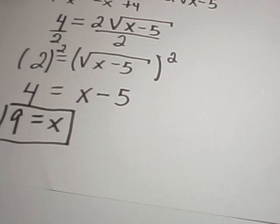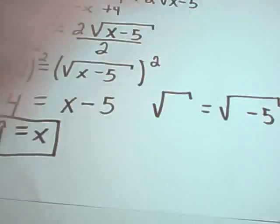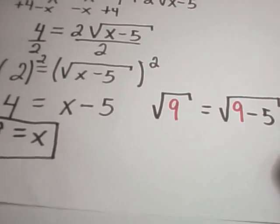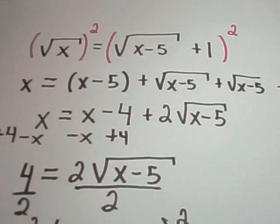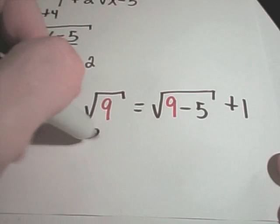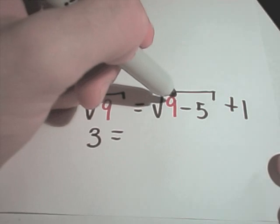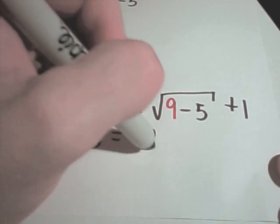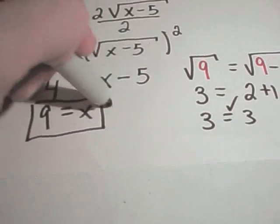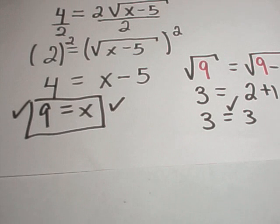I have to go back and plug this in to check. Our original equation was square root of x equals square root of x minus 5 plus 1. Plugging in x equals 9: the square root of 9 is 3; underneath the radical I get square root of 9 minus 5, which is square root of 4, which is 2; and 2 plus 1 is 3. So our value of x equals 9 is in fact a solution.